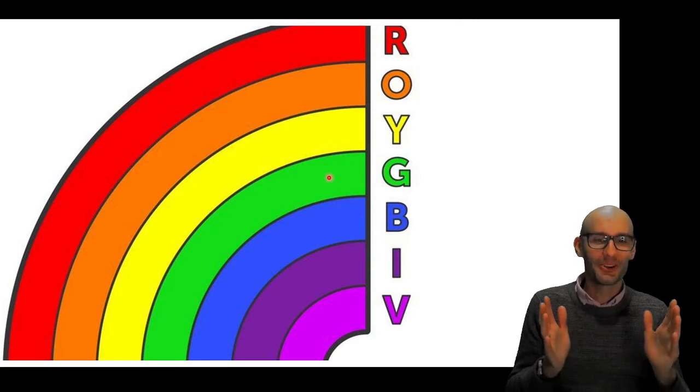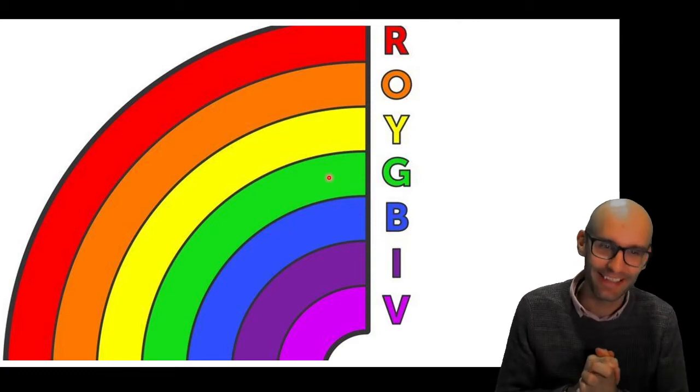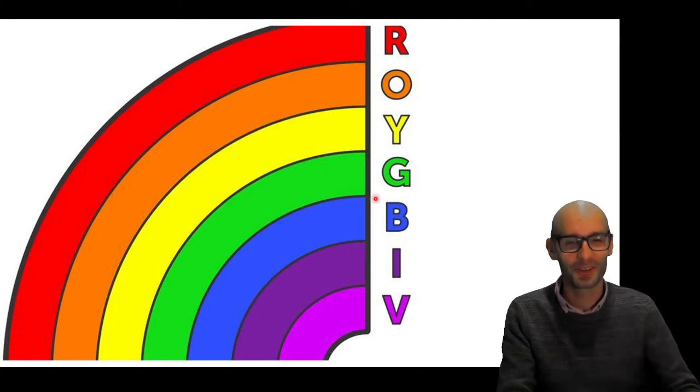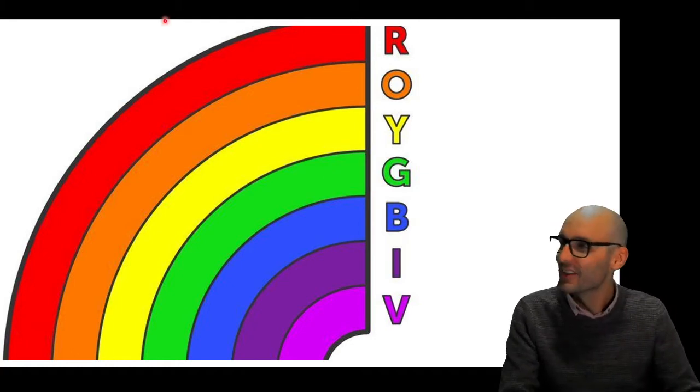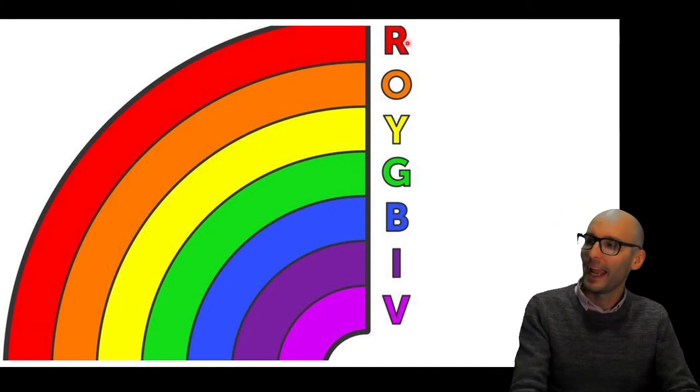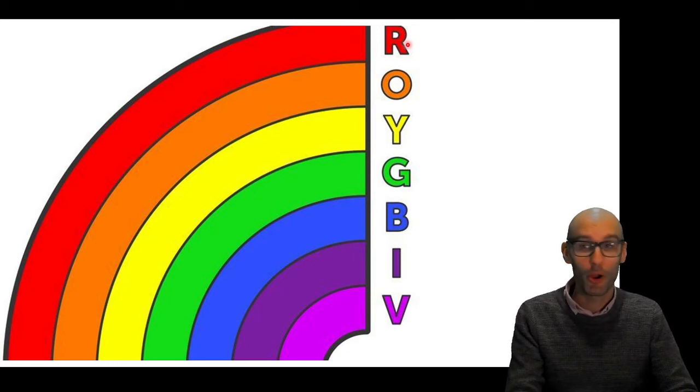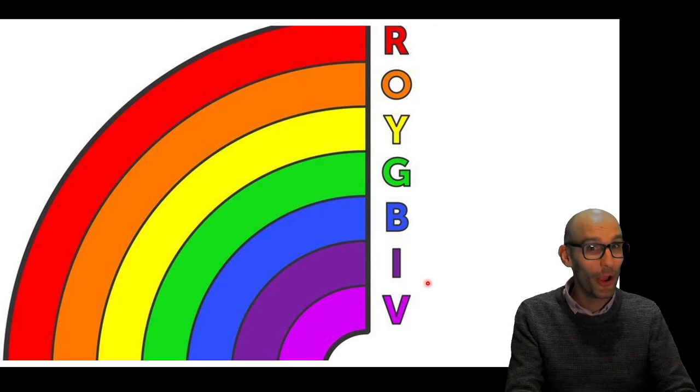The first thing I want to talk to you about is rainbows. So here is a rainbow. And we all know the colors of the rainbow is Roy G Biv: red, orange, yellow, green, blue, indigo, violet.